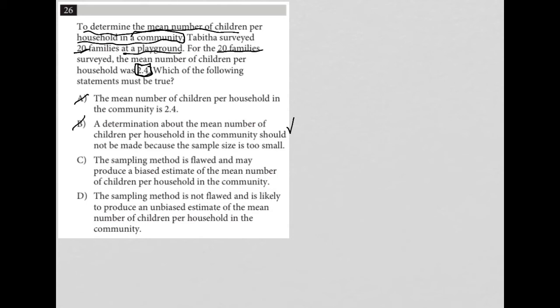It doesn't go into saying the sample size is too small, right, because we don't really know. So we don't really know how large the community is, but it does say that, hey, the way that this was done, the method is flawed, and that's definitely true. So C is a better answer than B was.